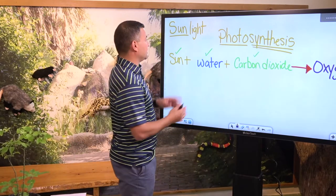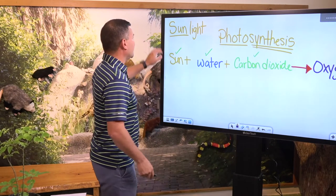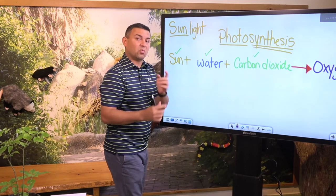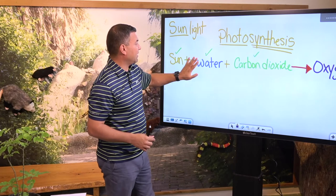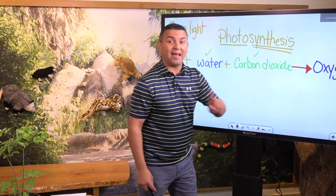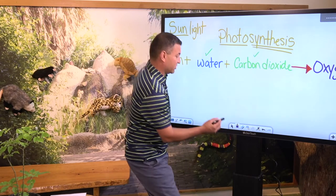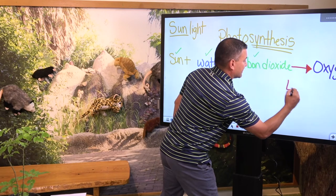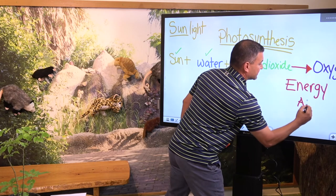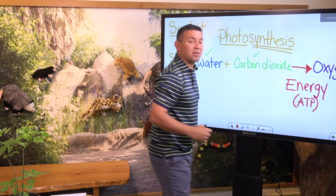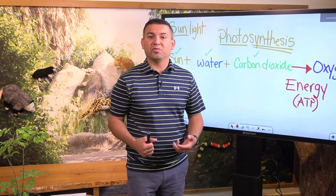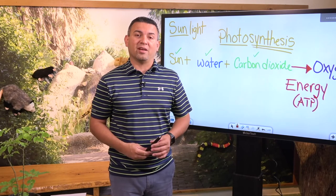Now let's finish this formula. Sunlight is the main ingredient — 'photo' means light, 'synthesize' means to put together. What are they putting together? Sunlight, water, carbon dioxide. What is the byproduct? They produce oxygen. And one more thing — they also produce energy. Plants need to make their own food so they can survive. They are autotrophic because they make their own food, through a process known as photosynthesis.